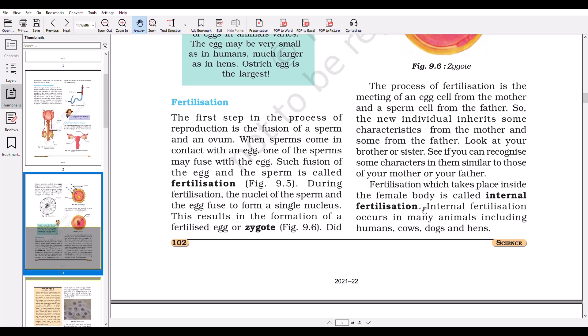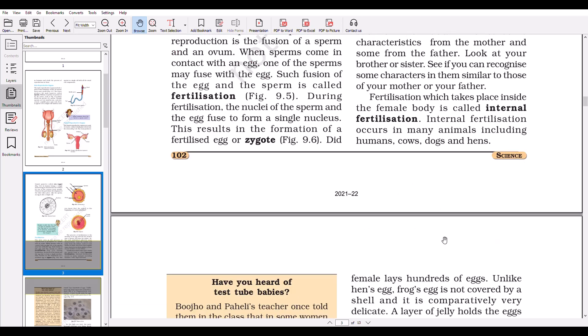Fertilization which takes place inside the female body is called internal fertilization. Internal fertilization occurs in many animals, including humans, cows, dogs, and hens.